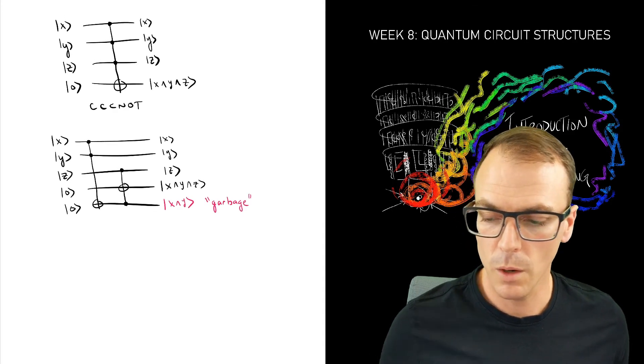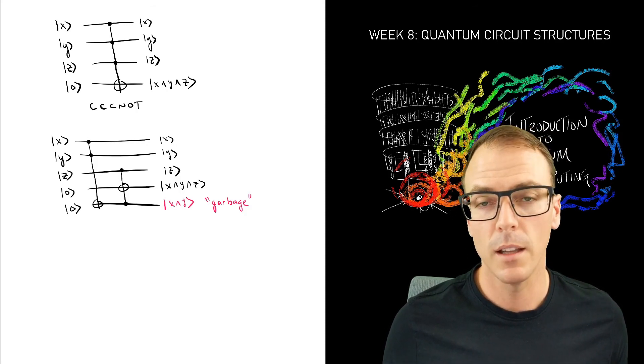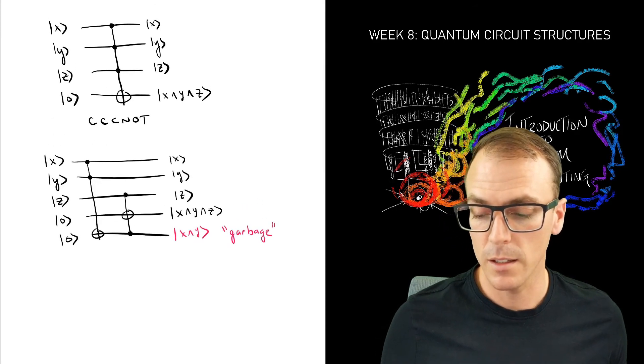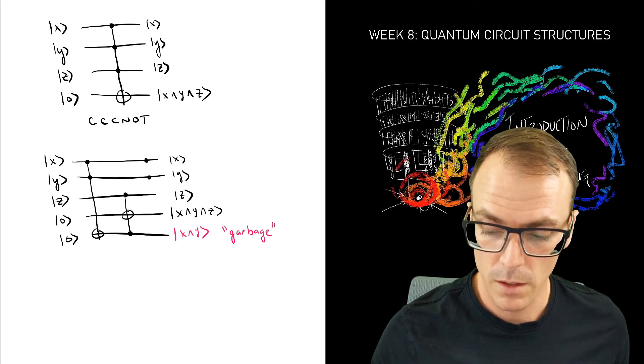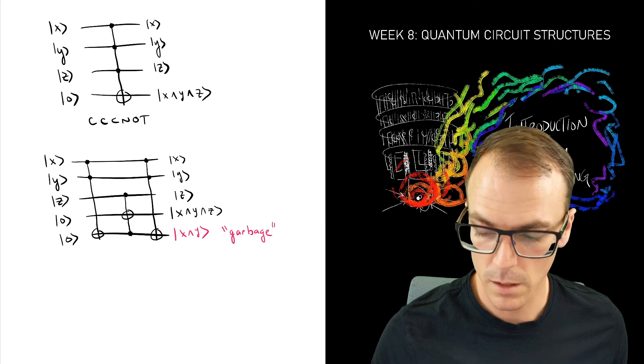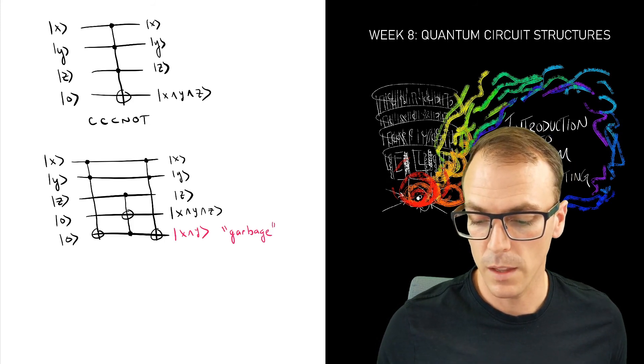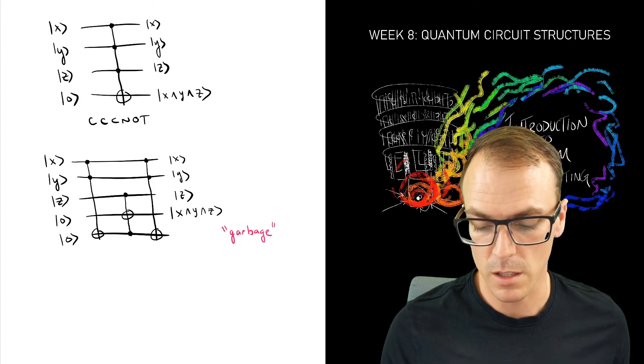And one way that we can do that is just undo that Toffoli that we had just done. So we want the inverse of the Toffoli, which is the Toffoli. So if we put this gate here, then we see that we've inverted the action. We haven't changed the first and the second qubit.